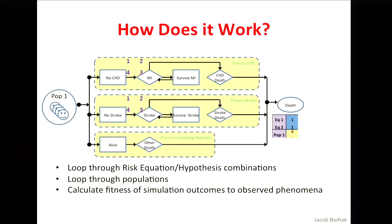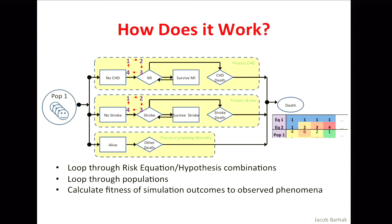Then you can write down the difference — here, for example, the difference was four. You can change this metric if you want; you have some control over it. Then the system does the same for equation number two, equation number three for an MI, equation number four for an MI, and so on. It will do it for stroke as well. You can add hypotheses on top of it because some things you don't necessarily know, and some of the equations may need some correction. You can add those corrections as hypotheses.